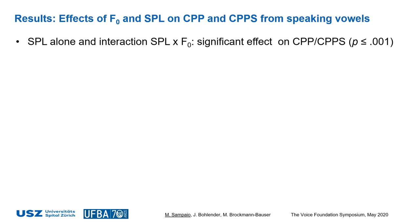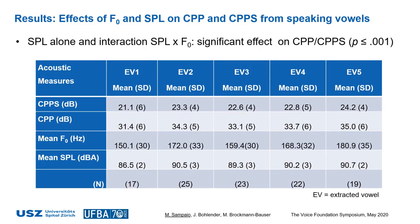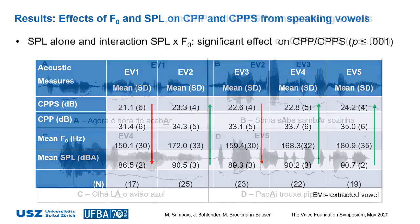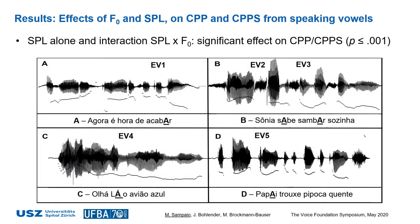The statistical analysis showed that SPL, as a single factor, had a highly significant effect on CPP and CPPS, followed by the interaction between fundamental frequency and SPL. However, fundamental frequency alone had no significant impact on cepstral measures. The table of descriptive results shows that higher and better cepstral values matched higher SPL and fundamental frequency, whereas the lowest cepstral values matched lower SPL and fundamental frequency.